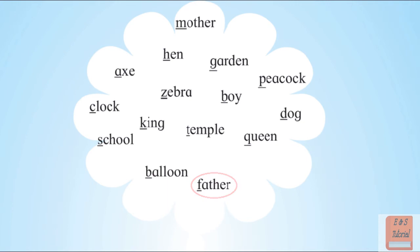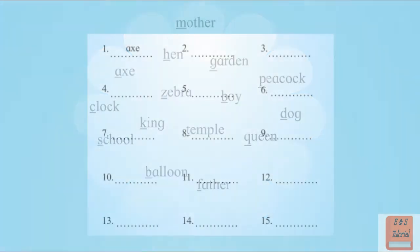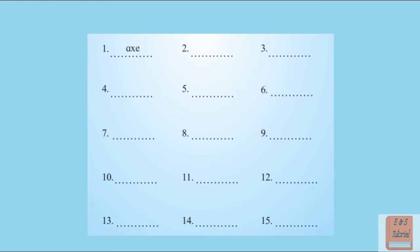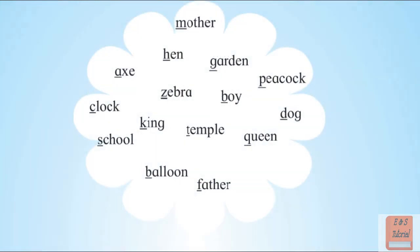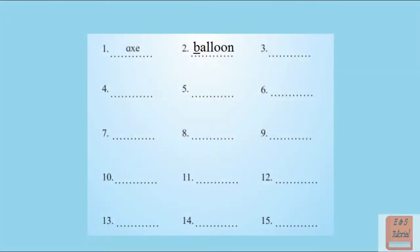So these are the 15 words that we need to arrange now. The first one is done for us. The first word is A. Now we need to check what is the next word. After A, the alphabet that comes is B. We have two words: one is balloon and one is boy. So we will write balloon first, and then on the third line we can write boy.